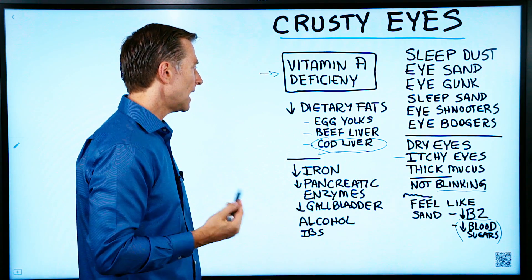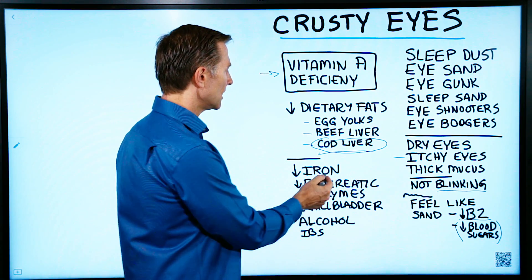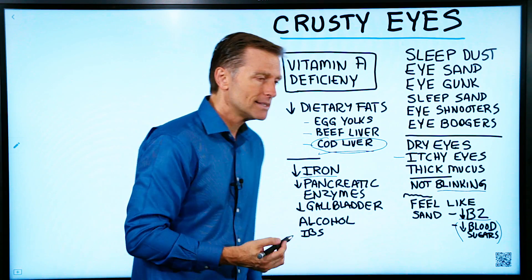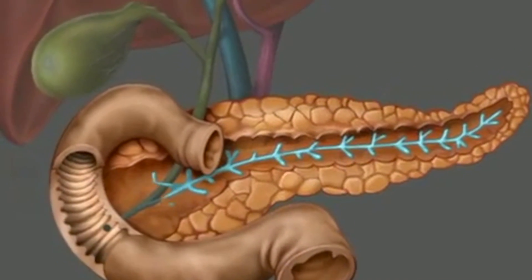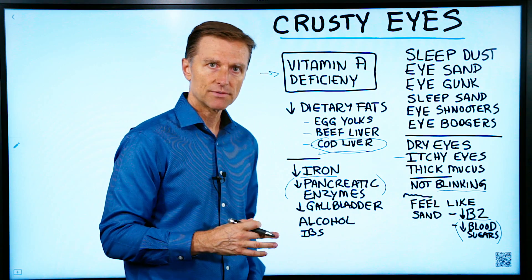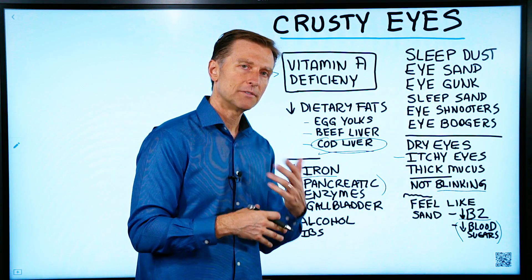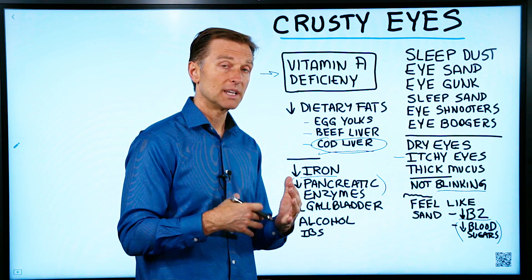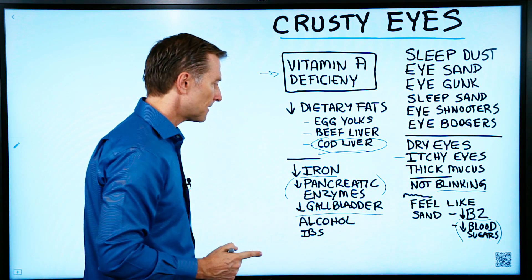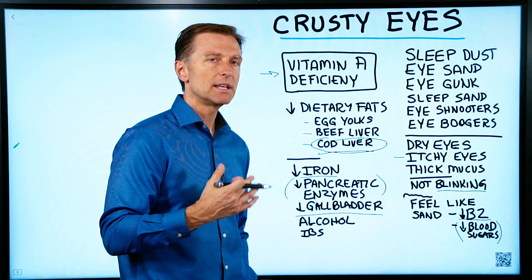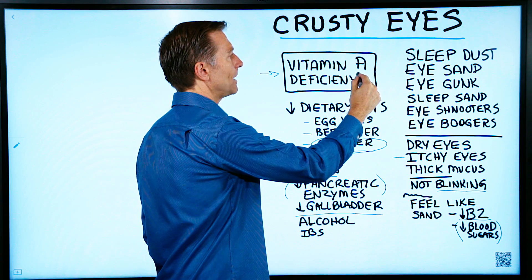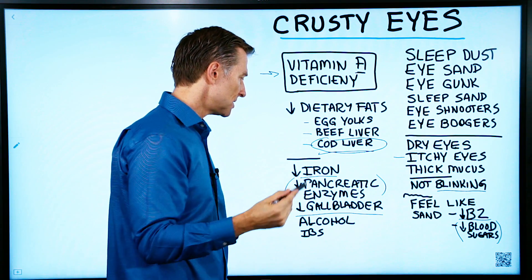What creates a vitamin A deficiency? Having low iron could do it. Or if you don't have the enzymes from the pancreas to digest fats — called lipase — because the pancreas may be burnt out from consuming too many refined foods, sugars, or processed foods. Gallbladder problems, not having a gallbladder, or a liver problem will prevent you from absorbing the full amount of vitamin A, creating a deficiency.